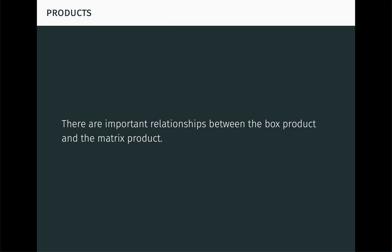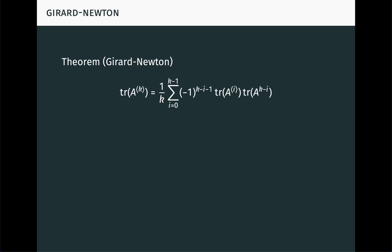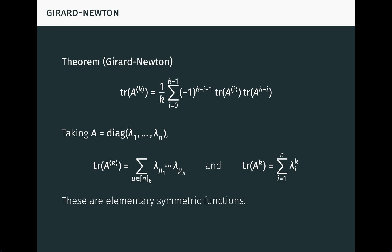There are important relationships between the box product and the matrix product. Cauchy-Binet is one of them, which we've already seen. Another is the classical Girard-Newton identity, which in our terminology provides a recursive relationship between the traces of the compound powers of A, and involves the traces of the matrix powers of A. Taking A equal to the diagonal matrix with diagonal entries λ₁ through λ_n, the traces have the values seen here, as you can easily verify. These are just elementary symmetric functions, which are the things Girard and Newton were actually thinking about in this connection.